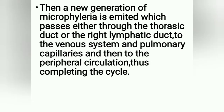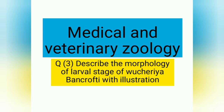A new generation of microfilaria is then emitted, passing through the thoracic duct or the right lymphatic duct to the venous system and pulmonary capillaries, then to the peripheral circulation, thus completing the cycle.